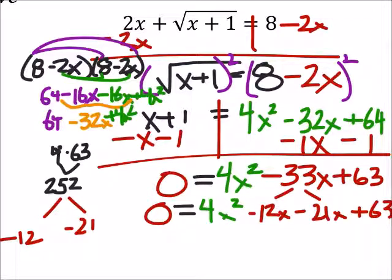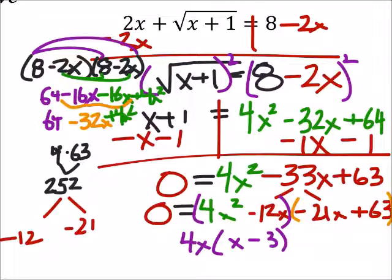So this is just factoring by grouping all over again. From here, I'm going to factor out from these two. Looks like I can factor out a 4x, which leaves me with an x minus 3. And then when I factor out from these two, I'm going to need to factor out, well, looks like a negative 21, which leaves us with x minus 3. And that's good because that gives us an x minus 3 to factor out from both of those terms.